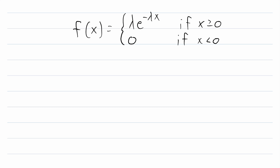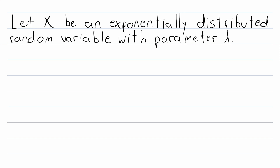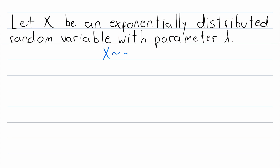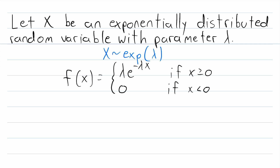Exponential distributions are often used to model the time until a particular event occurs, or the time between two events. We'll say let x be an exponentially distributed random variable with parameter lambda. This notation means that x is exponentially distributed with parameter lambda, and of course we know this is the probability density function of x.